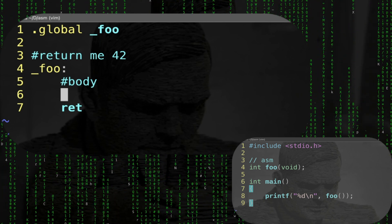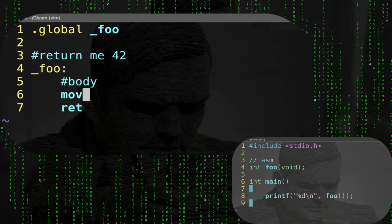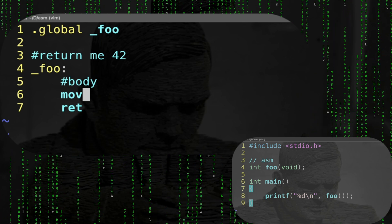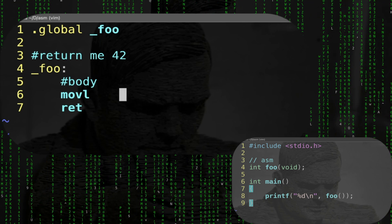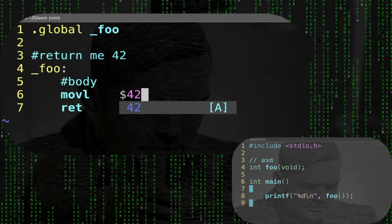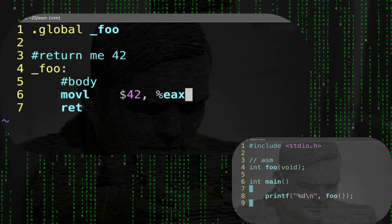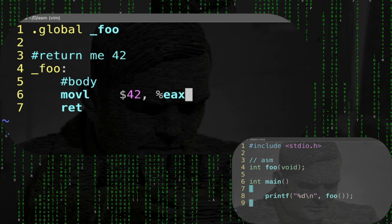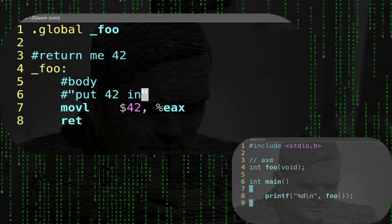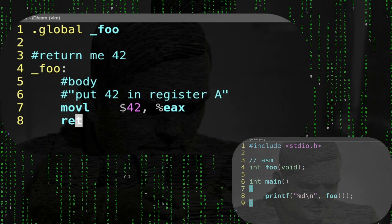To do that we have to put the value 42 in register A - this is a calling convention. So I need a move instruction: movl. The source is going to be $42, the value I want to put in the register. The destination is going to be %eax - this is register A. So in assembly: put 42 in register A, and then simply return.